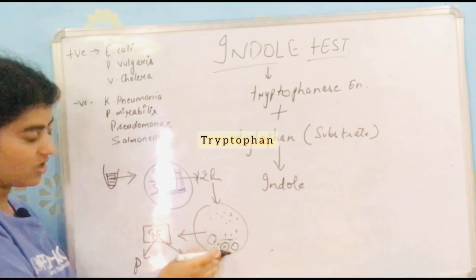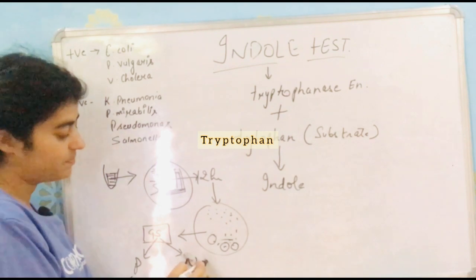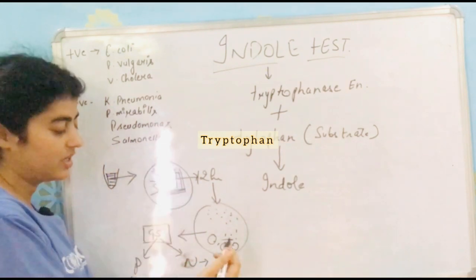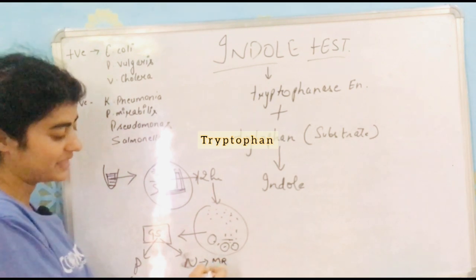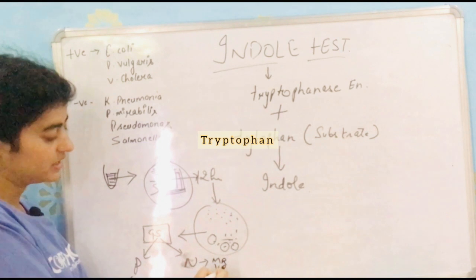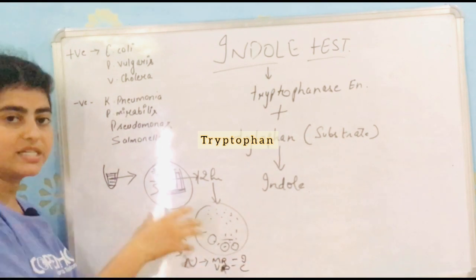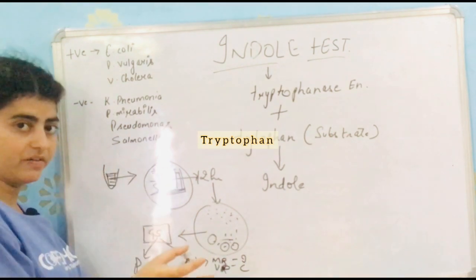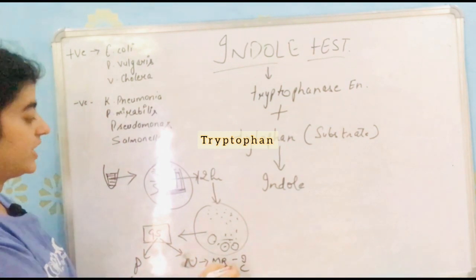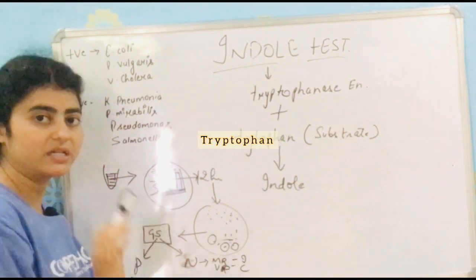If the bacteria is gram positive, you perform the catalase test. If the bacteria is gram negative, you perform four to five biochemical tests such as MR (methyl red), VP (Voges-Proskauer), indole, and citrate utilization test. These are the tests performed when gram staining is negative.